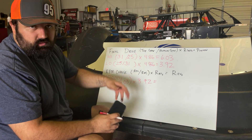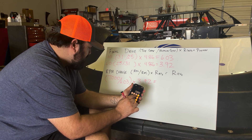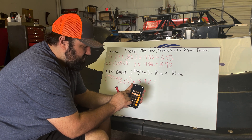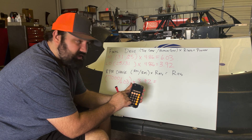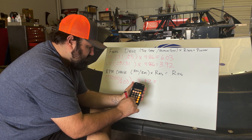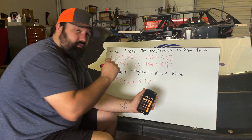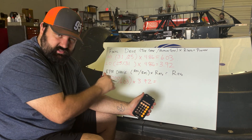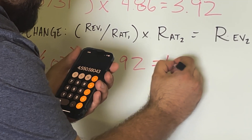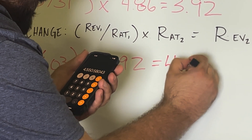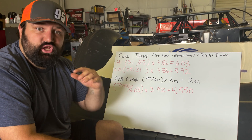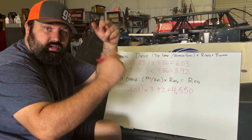Taking the top gear and putting it on the bottom, and the bottom gear on top — little gear on top: 7,000 divided by 6.03 gives us 1,160.86. Take that times our new ratio of 3.92. If we were to switch the top and bottom, we would have gone from 7,000 RPM down to 4,550 RPM. That'd be a huge rev change by swapping the gears.